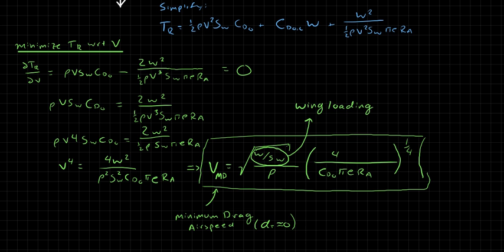If an aircraft weighs a lot and has tiny wings, it has high wing loading. If it doesn't weigh much and has huge wings, it has very low wing loading. Decreasing weight or increasing wing area reduces wing loading and therefore brings the minimum drag airspeed down — you won't have to fly as fast to reach the minimum thrust required point. We'll discuss wing loading more in another video.